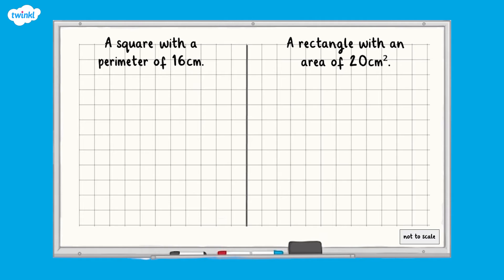All finished? Well done. Here are your answers. To draw a square with a perimeter of 16 centimetres, we can divide the perimeter, 16 centimetres, by 4, as each side length will be equal. 16 divided by 4 is equal to 4, so each side length will be 4 centimetres.